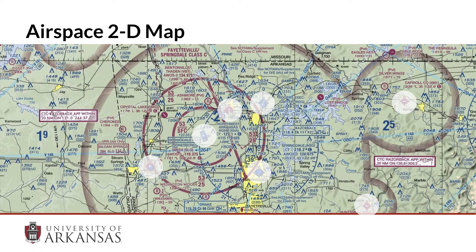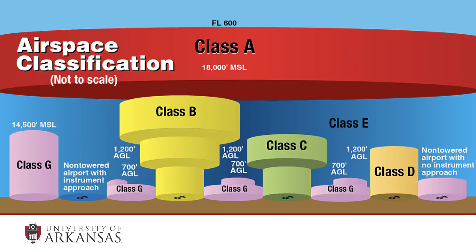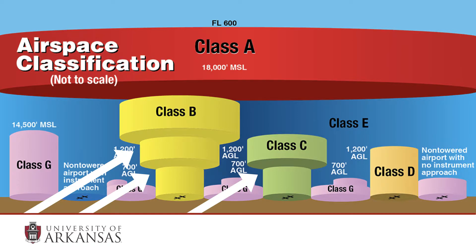One area near airports that's confusing are the B and C airspace shelves. This is airspace that has a floor in parts of some areas, and our 3D thinking comes into play here. We'll spend some time reviewing maps and annotations to try to help us navigate airspace.